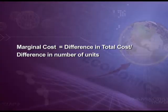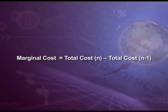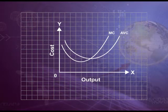Symbolically, marginal cost equals the change in total cost divided by the change in number of units, or MC = TC of n units minus TC of n minus 1 units. The marginal cost curve is also a U-shaped curve due to the law of variable proportions.